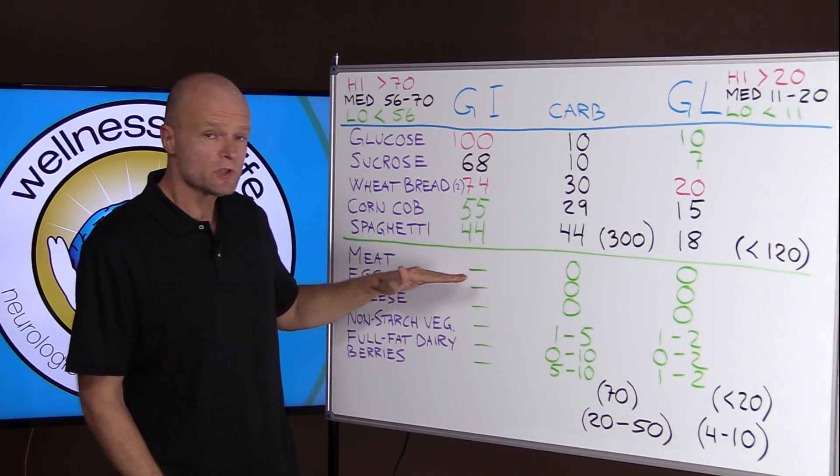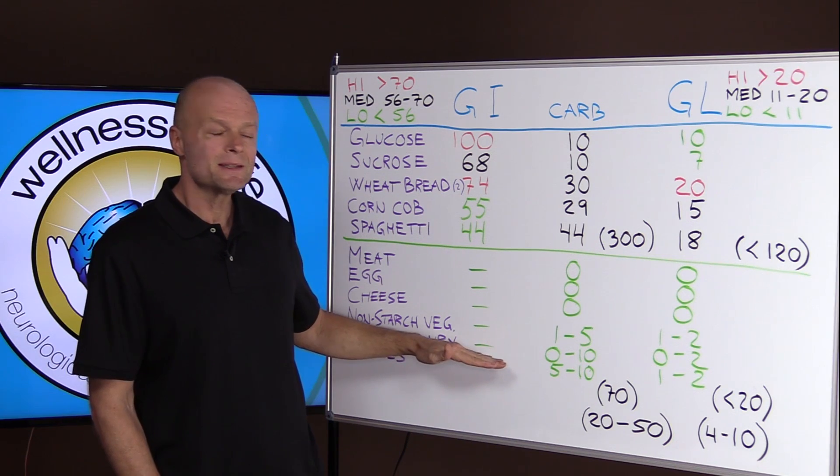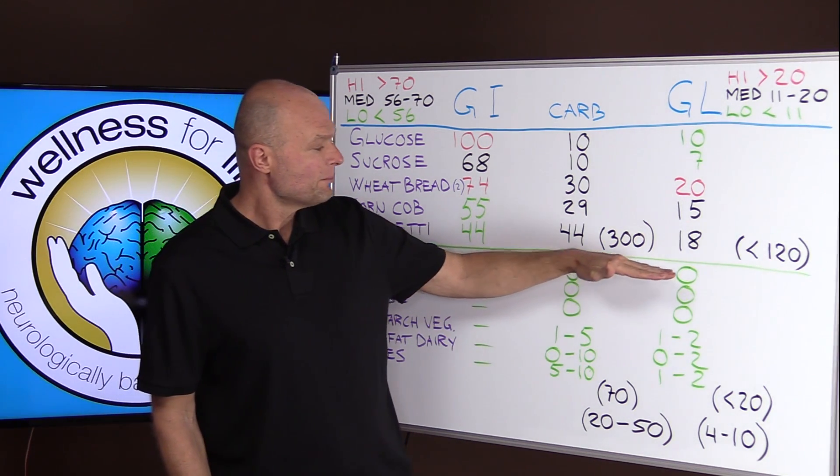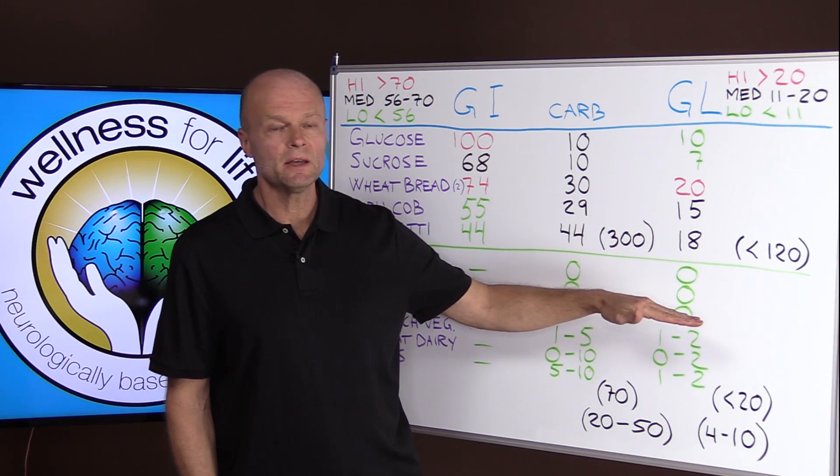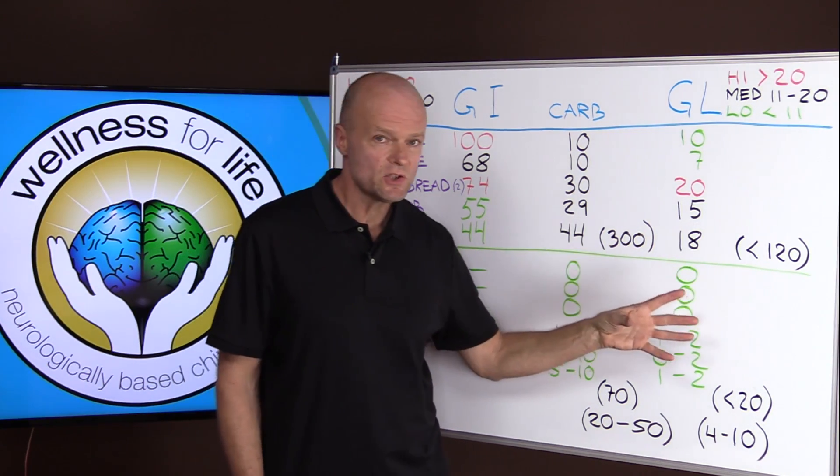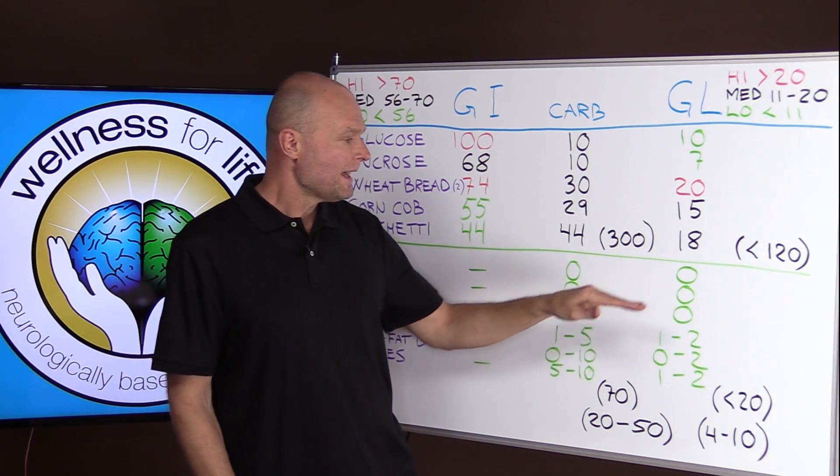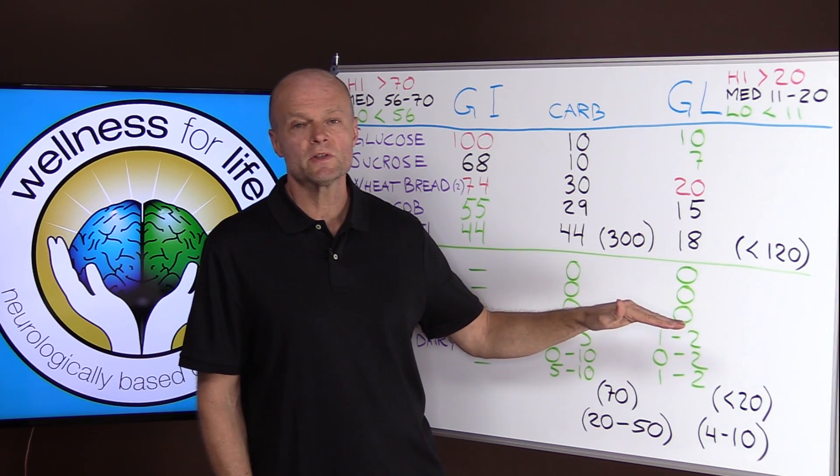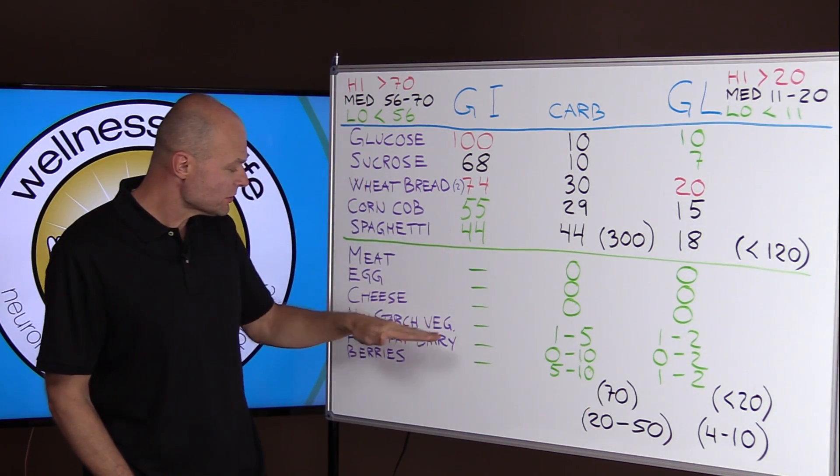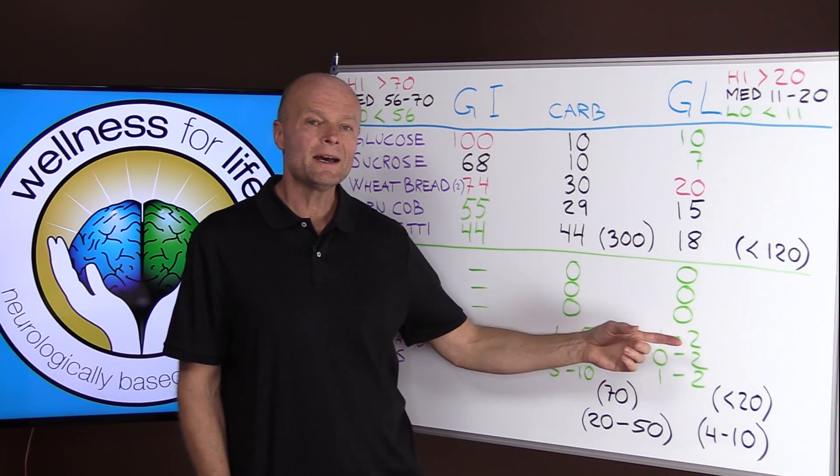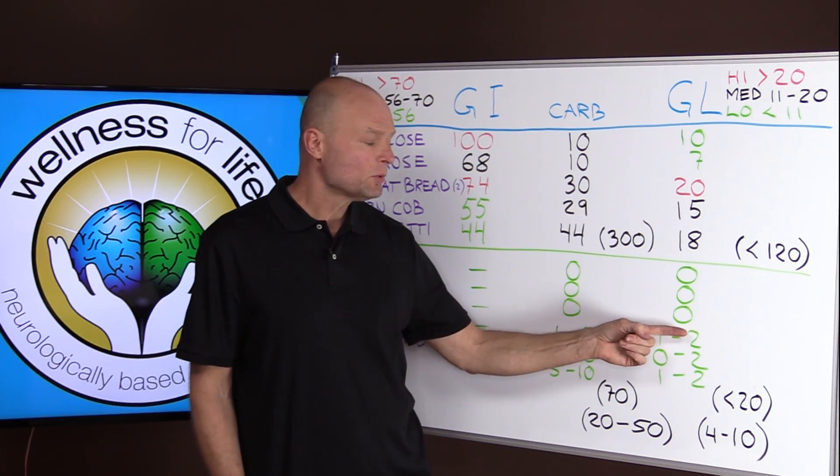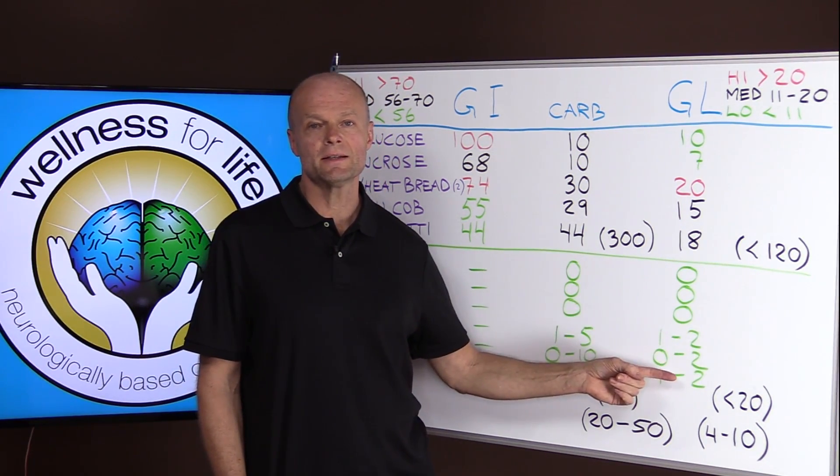But also, these foods have very low glycemic indices. So for meat and egg and cheese, we get zero glycemic load, meaning you can eat as much as you want of those all day long and not have any impact whatsoever. And the non-starchy vegetables, full-fat dairy, and berries, you can still have servings and stay between one and two in the glycemic load.